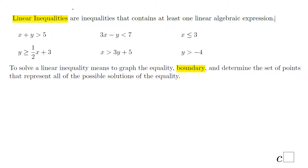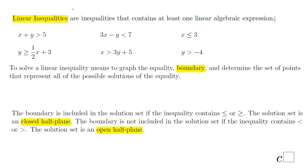To solve an inequality means to graph the equality. That graph, which is a line, is called a boundary — the dividing line. Then you have to find the set of points that satisfy your inequality. Important: if you have ≤ or ≥, the boundary line is a full line and the solution set is a closed half-plane. If you have < or >, the solution set is an open half-plane and the boundary line is a dashed line.